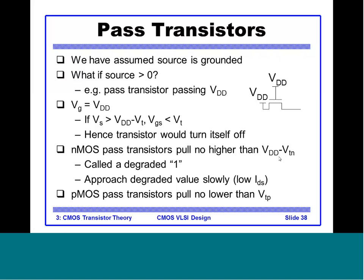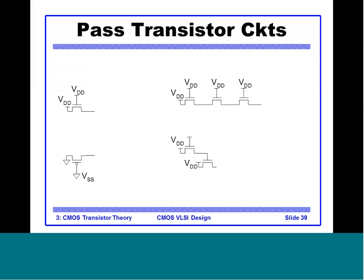In most designs NMOS is only used for the pull-down network since it passes a strong 0. Correspondingly, PMOS passes a strong 1 but will pass no voltage lower than |VTP|, which is why PMOS is used in the pull-up network — it passes a strong 1 but a weak 0.